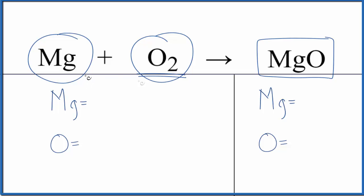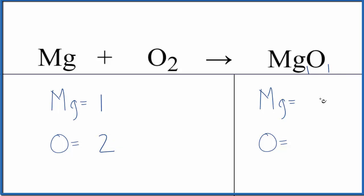Let's balance the equation. One magnesium and two oxygens in the reactants, in the products one magnesium and one oxygen.